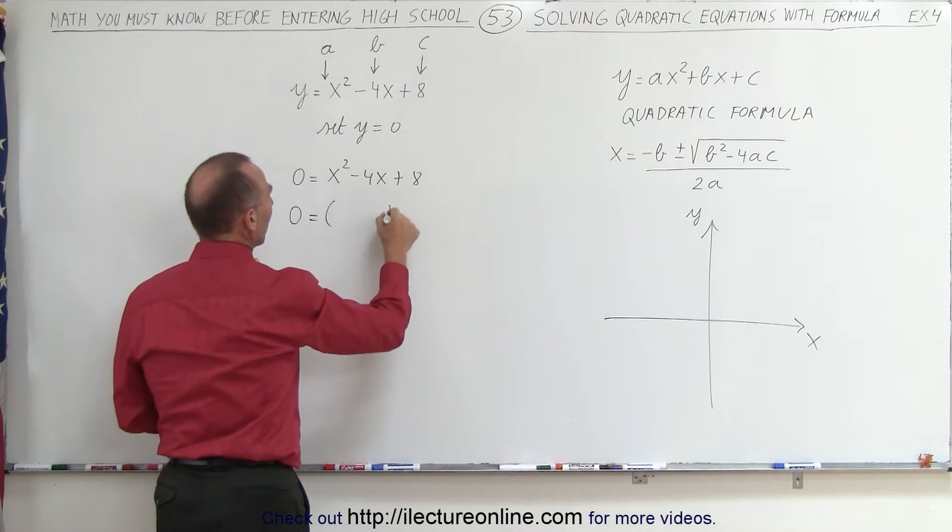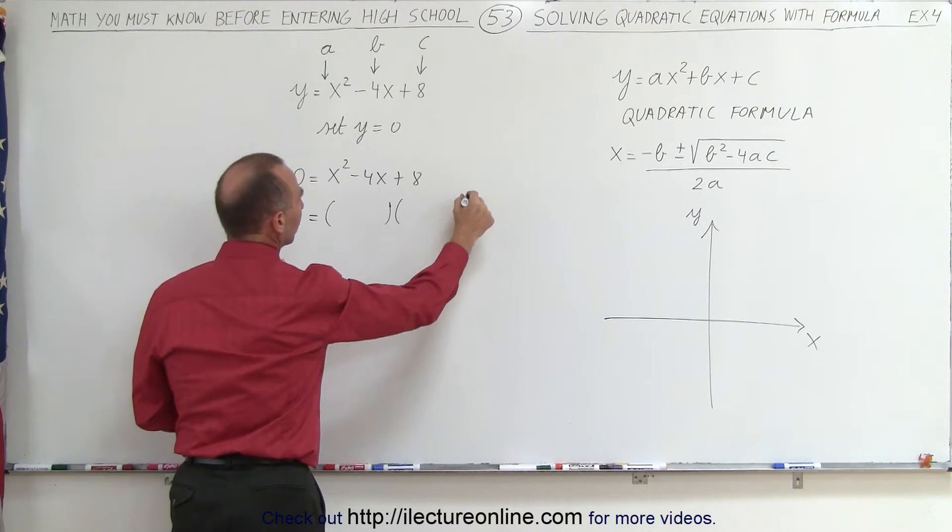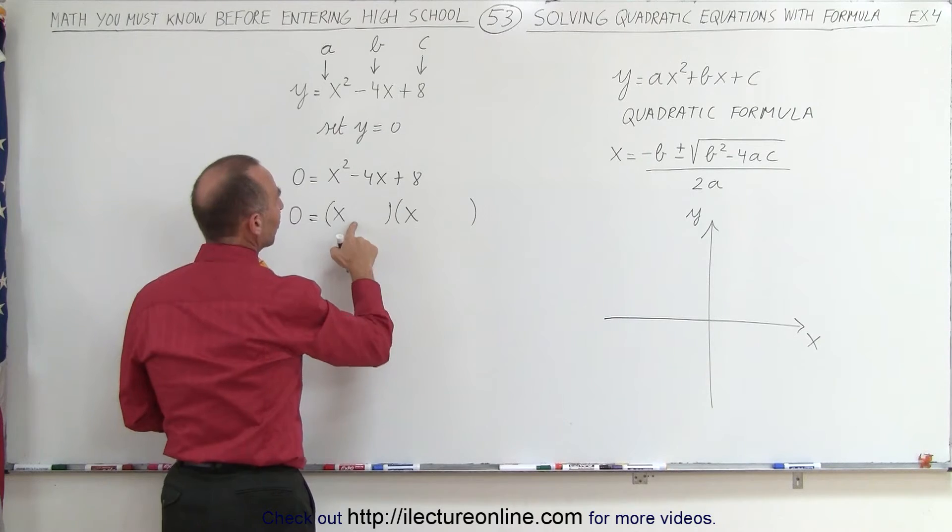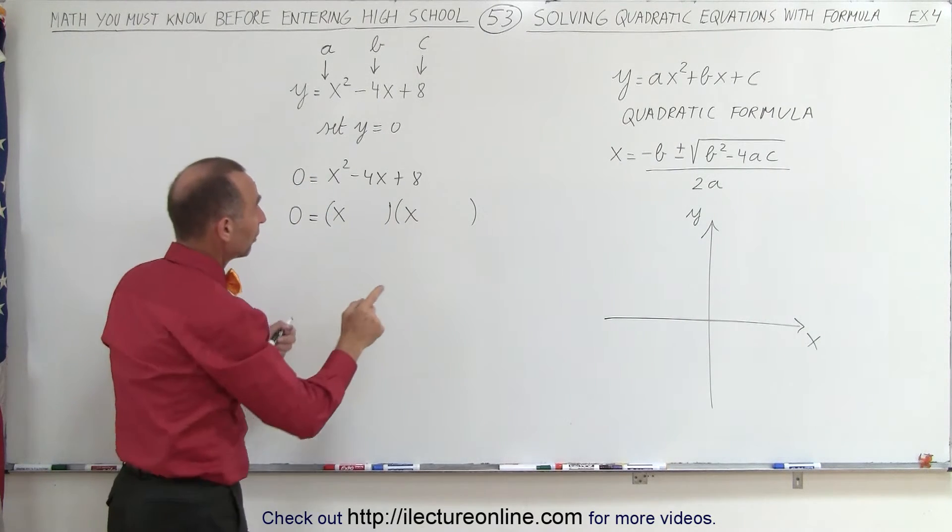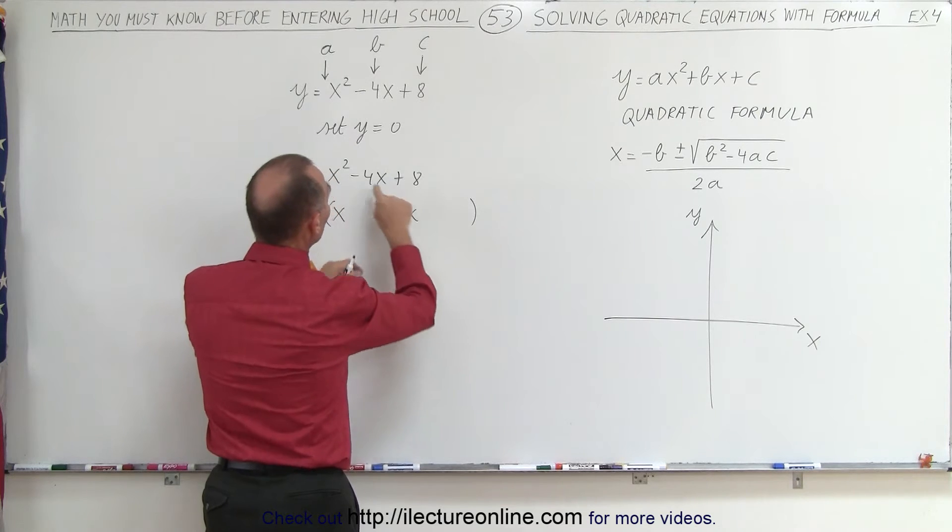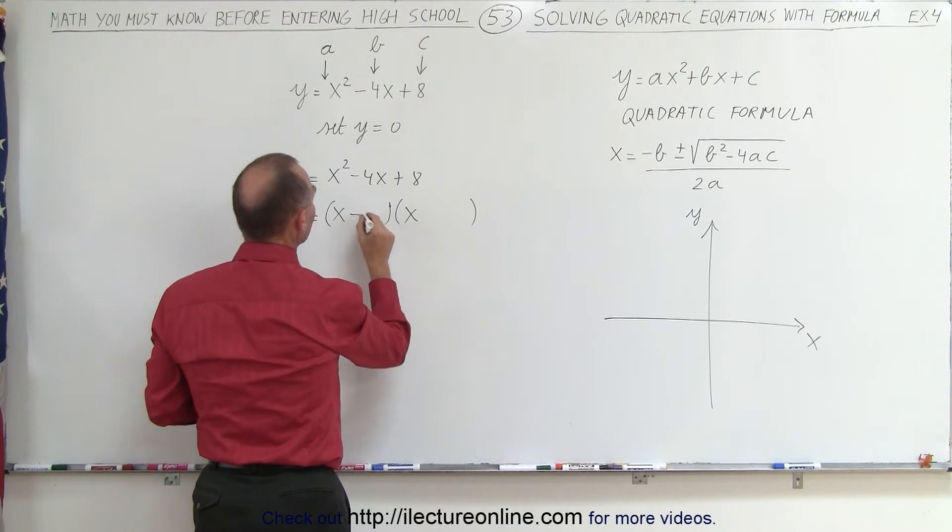So 0 is equal to, we want to write it as the product of two binomials. So we get x and x. The signs would have to both be negative, because when we multiply the two numbers together, we get a positive 8, and when we add them together, we get a negative 4. Negative, negative.